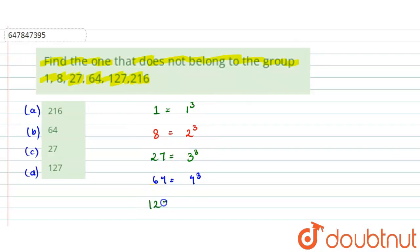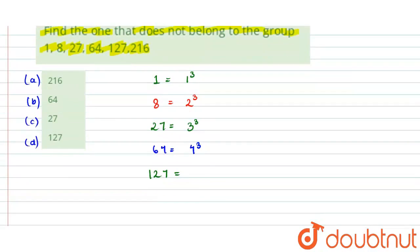Next, we have 127. Now, let's see, 127 is not a perfect cube. 5 cube is 125, so 127 is 5 cube plus 2. 125 is 5 cube. But, here we have 127. So, this is our wrong term.